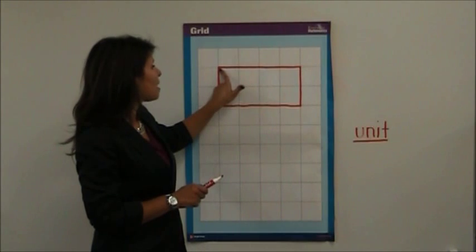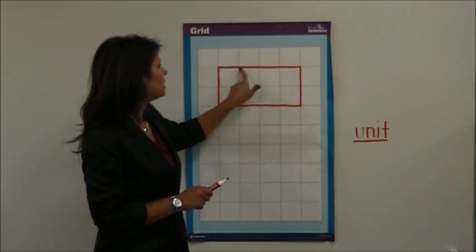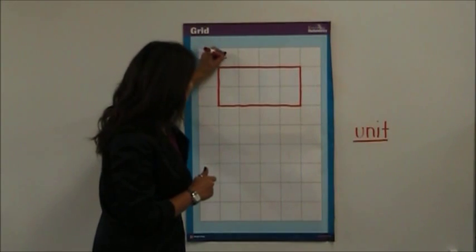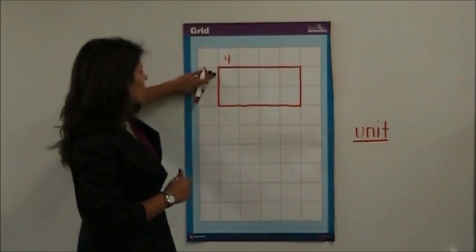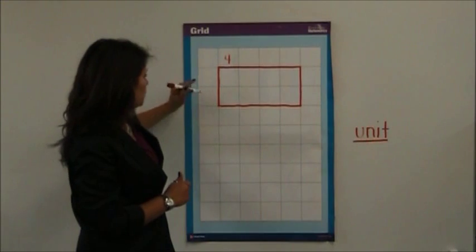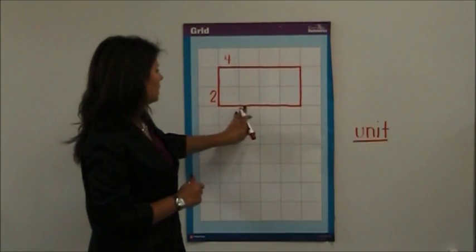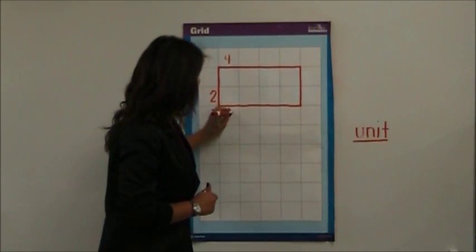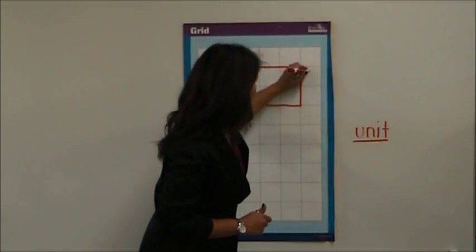So for example, on the top of my rectangle I have 1, 2, 3, 4. On the side I have 1, 2. Then 1, 2, 3, 4, and 2 on this side.